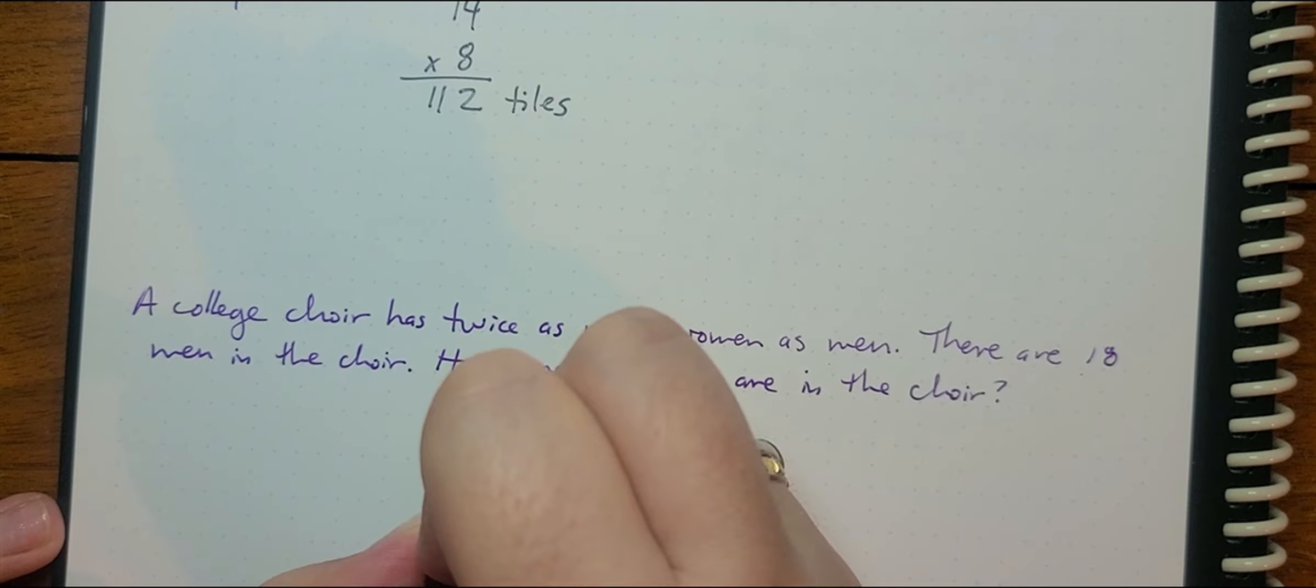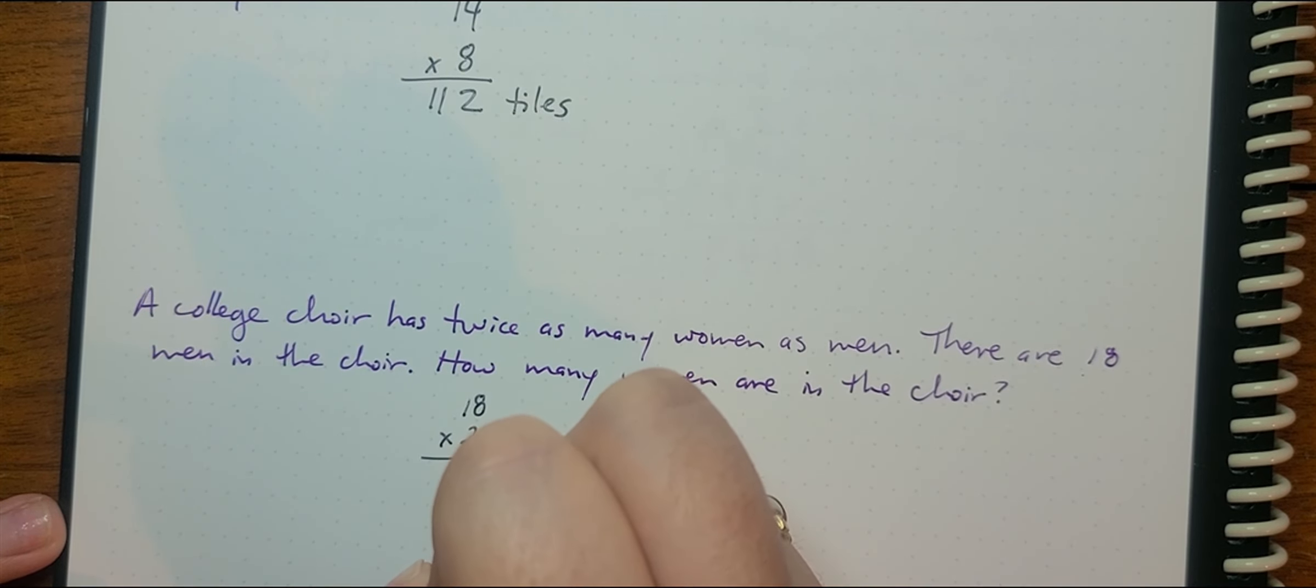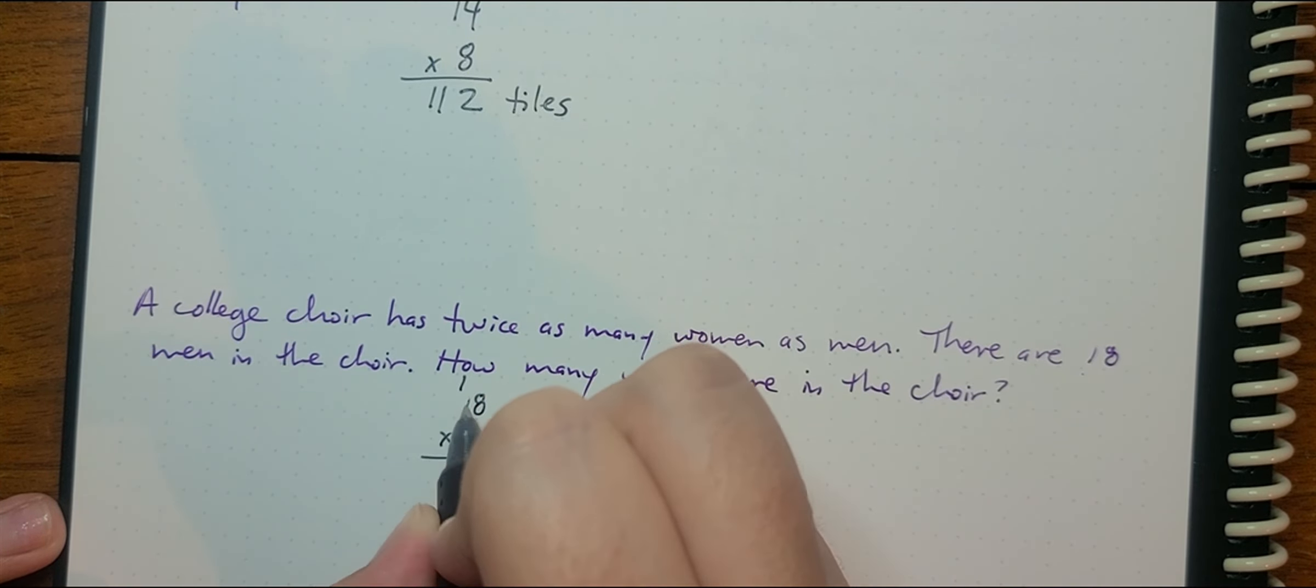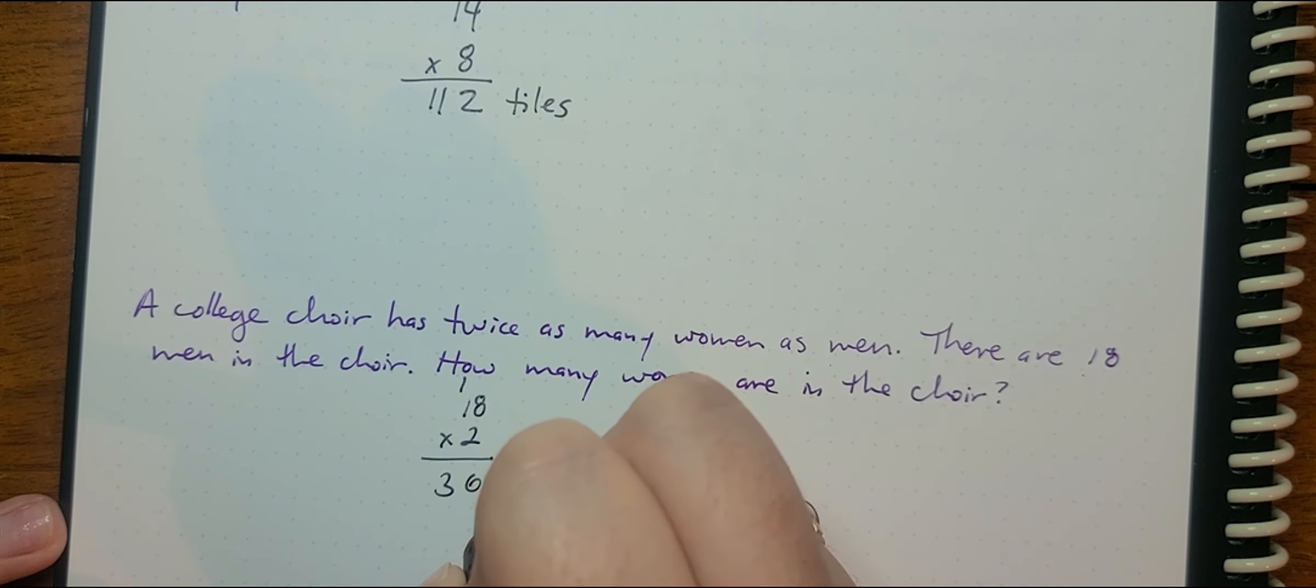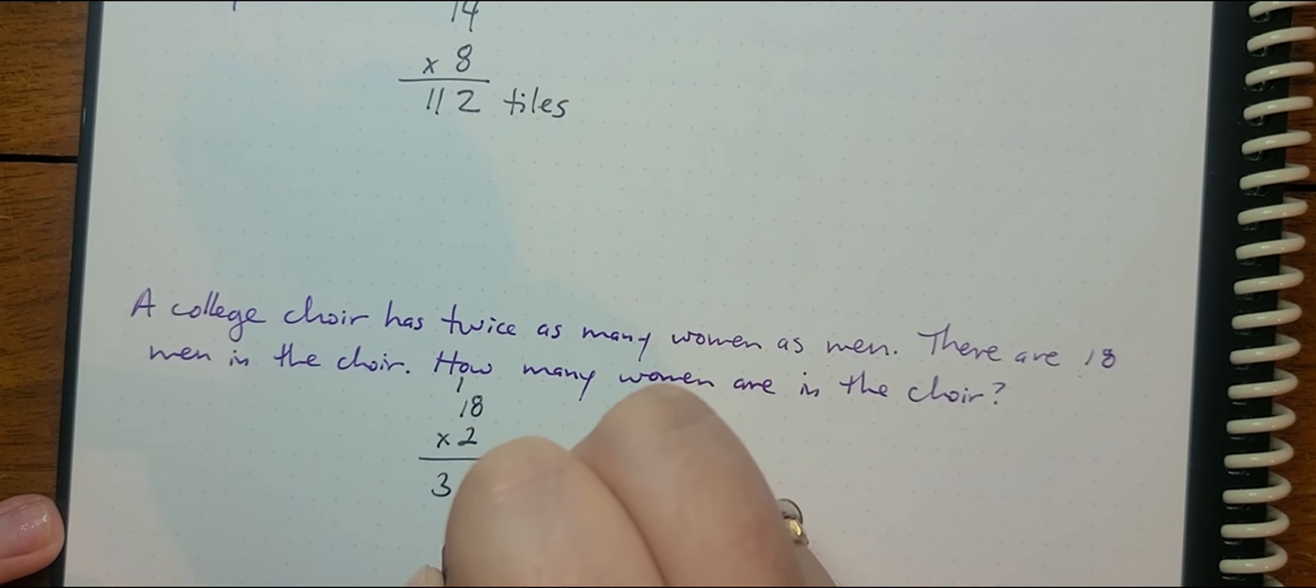So we're going to take 18 men times twice, which means two. So we're going to take 18 times two. Eight times two is 16. Two times one is two, plus one is three. So we have 36 women in the choir.